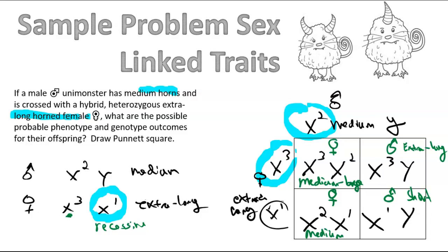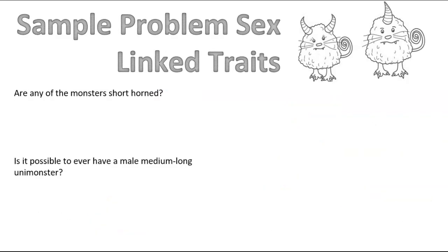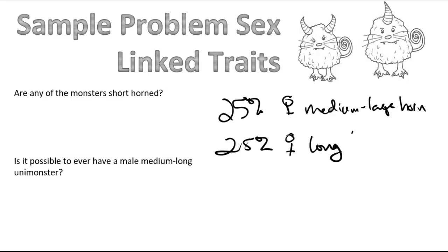Alright, so let's look at all the probable outcomes. There's a 25% chance of having unimonsters that is a female with medium-large horn, 25% chance of having unimonsters that's going to be long, 25% chance of a male that's going to have extra long, and another 25% chance male that's going to be short.